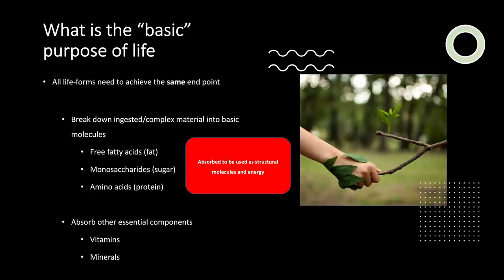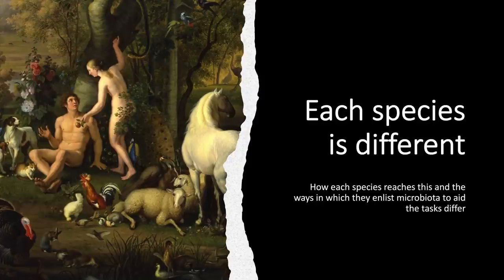All life forms need to achieve the same endpoint. We need to break down ingested complex material into their basic molecules — free fatty acids from fat, monosaccharides which are simple sugars from more complex sugars, amino acids from protein — to be absorbed for use as structural molecules and energy, and to absorb other essential components such as vitamins and minerals. Each species differs in how they enlist their gut microbiome and microbiota to do this, and this is something we've failed to take into account when we encounter modern illness, in particular chronic illness.